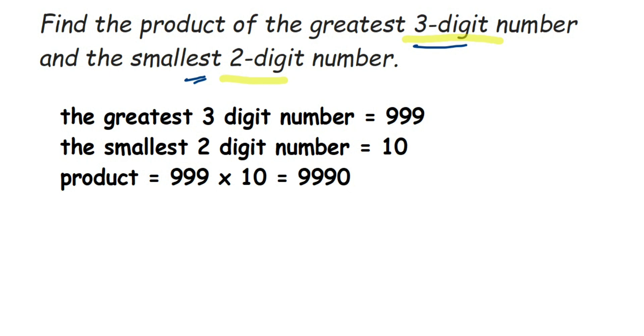It's a very simple problem. The only thing is you have to find out the greatest three-digit and smallest two-digit number, then just multiply. If you have any question or doubt, you can drop a comment. Thank you so much for watching.